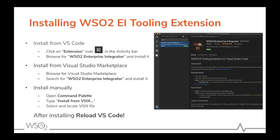The third option is to install manually using the command palette. Depending on your operating system — Command+Shift+P on Mac, or Ctrl+Shift+P on Linux and other machines — open the command palette, type 'Install from VSIX', browse to download the file, locate it, and perform the installation. After installation, you need to reload VS Code.